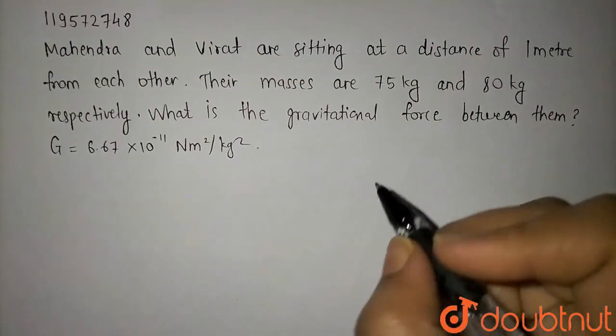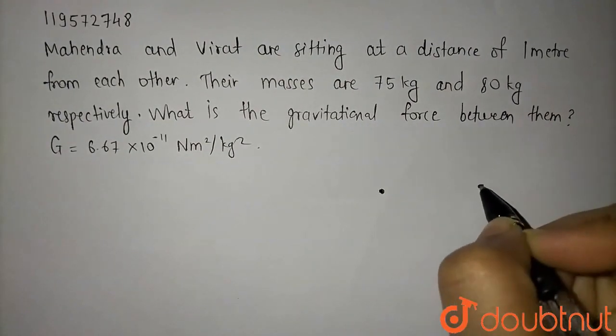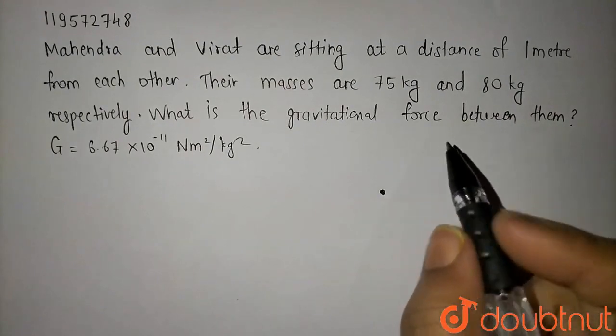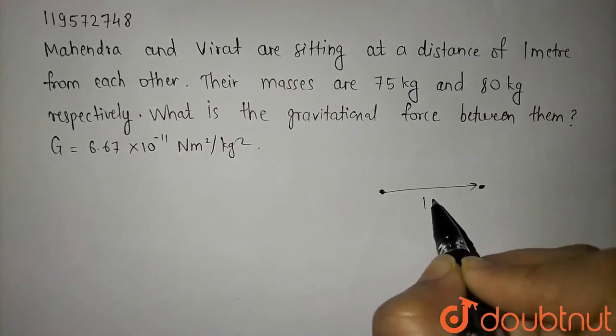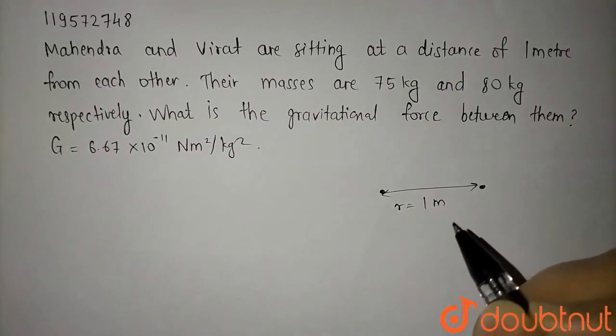Here we have said that Mahendra and Virat are sitting at a distance of 1 meter. So R is 1 meter.